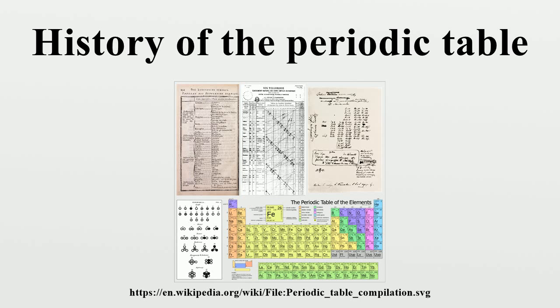John Newlands. In 1864, the English chemist John Newlands classified the 62 known elements into eight groups based on their physical properties.